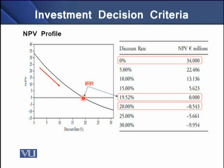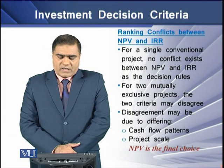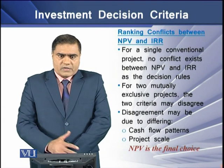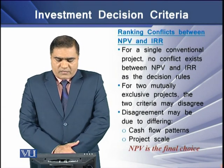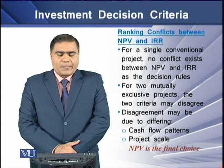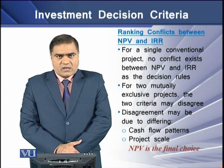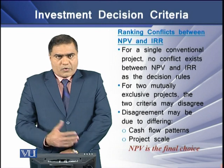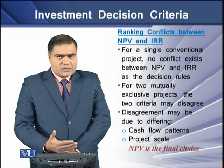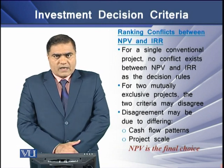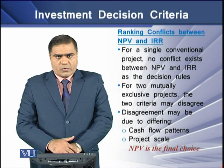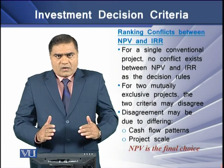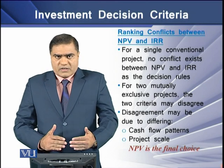At discount rates above the IRR, NPV starts becoming negative. Regarding ranking conflicts between NPV and IRR, for a single conventional project there is no conflict between IRR and NPV as both criteria are in agreement with each other.